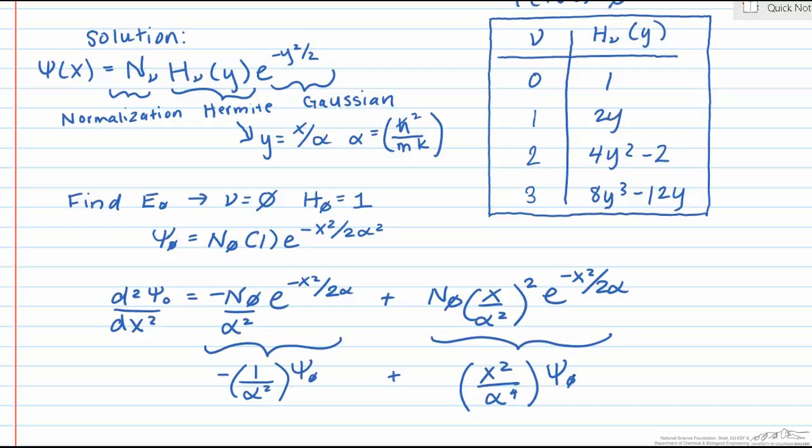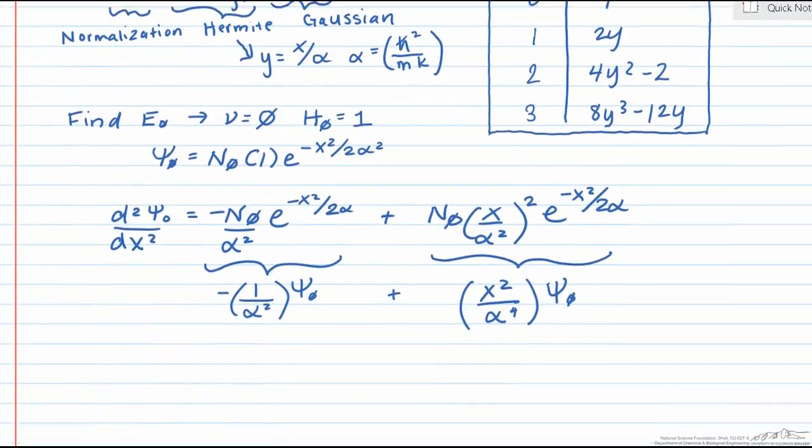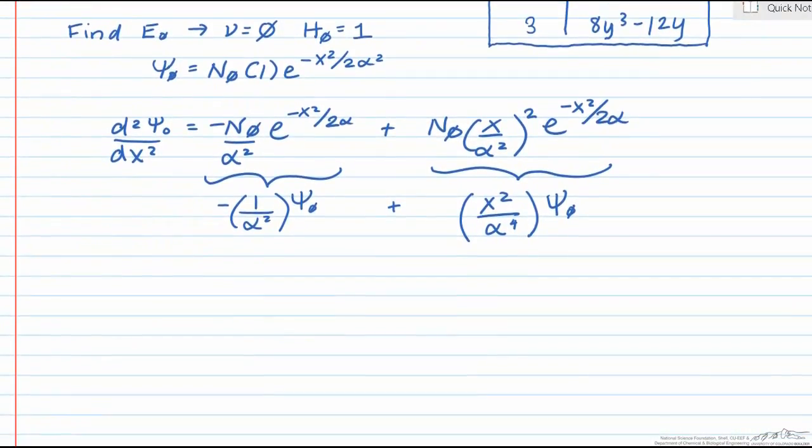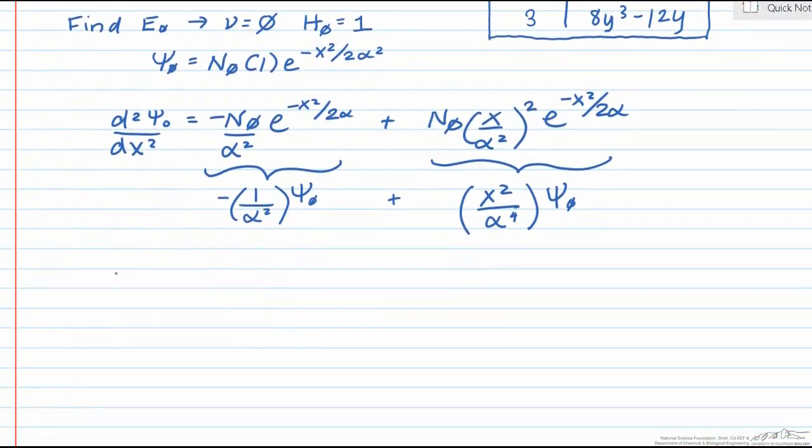Now we can plug this back into our Schrodinger equation using our definition of alpha and simplify. After plugging all of this back into the Schrodinger equation, we find that the lowest energy state, also known as the zero point energy, is equal to ℏ over 2 times the square root of k over m.